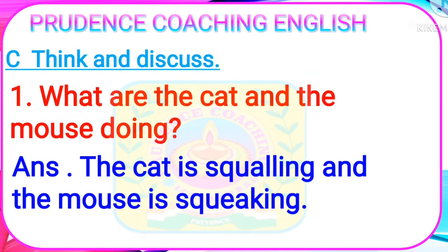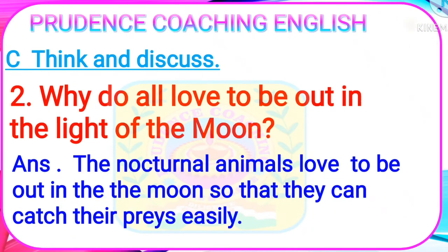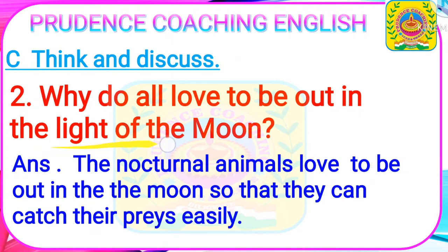Next, we have Think and Discuss. First question: what are the cat and the mouse doing? Answer: the cat is squalling and the mouse is squeaking. Next question: why do all love to be out in the light of the moon? Answer: the nocturnal animals love to be out in the moon so that they can catch their prey easily.